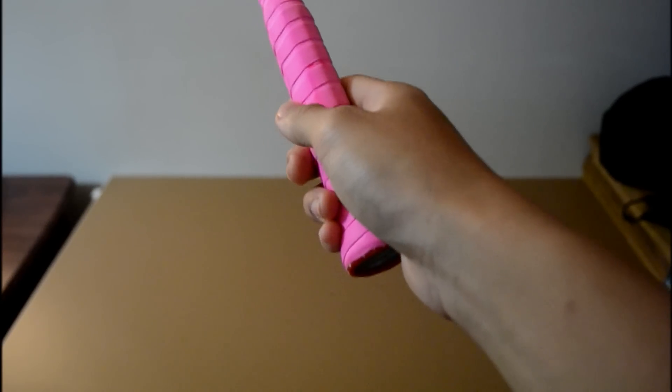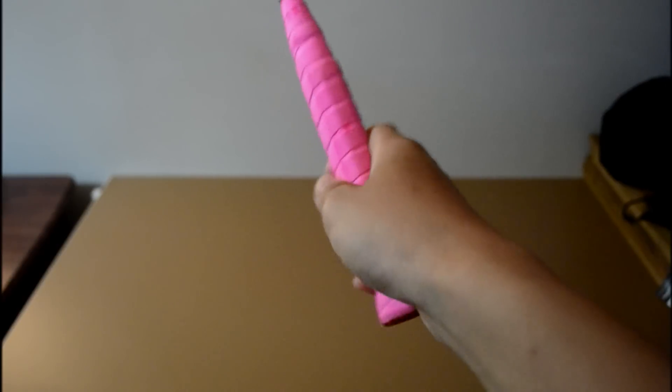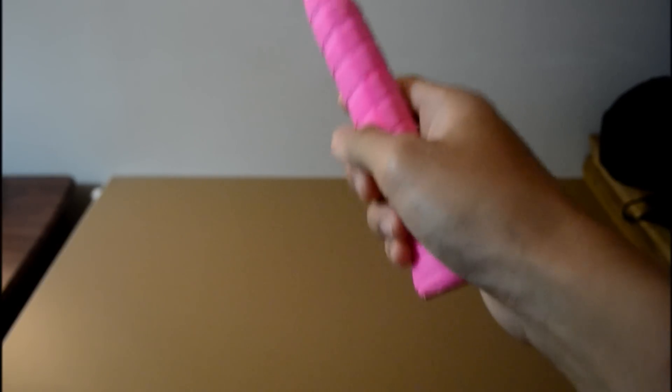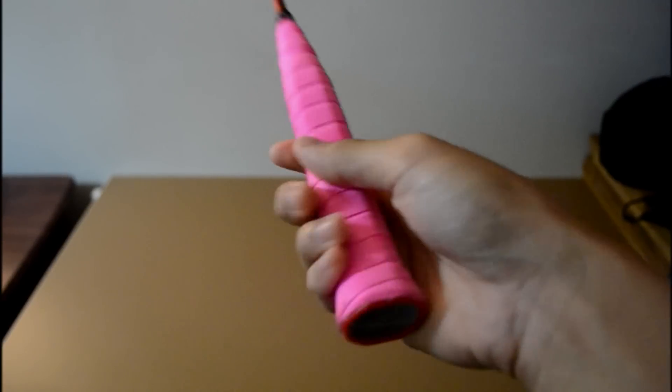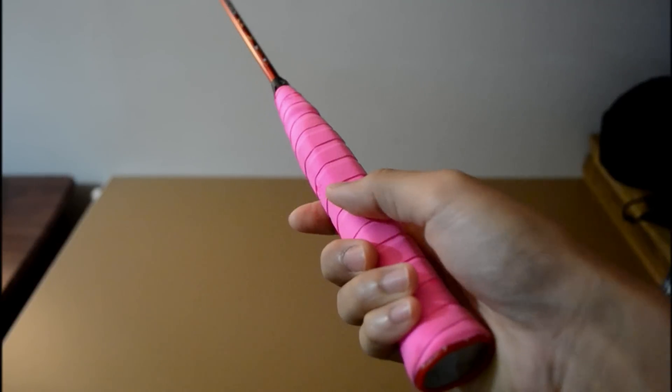So what I'll be going over first is the forehand grip. And the forehand grip is what you're going to be using for your clears, your smashes, your drop shots. It's the basis of a lot of shots.